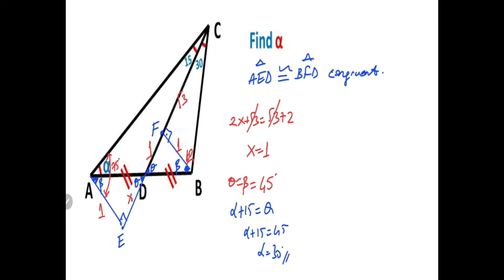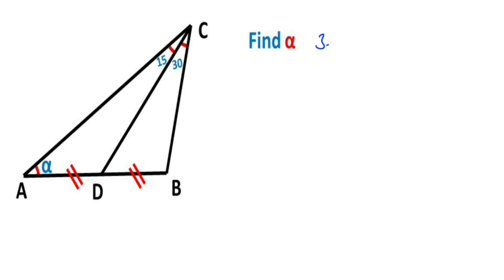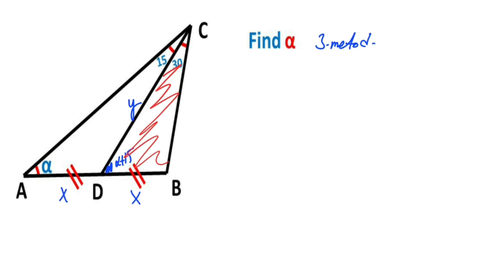Now let's calculate the value of alpha using the third method. First step: let's call these equal sides x and here let's call y. We know that 2 interior angles equals 1 exterior angle. For this triangle, if we apply the sine rule — angle DBC equals 135 minus alpha.